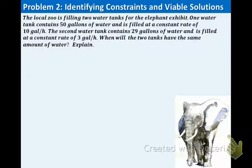Example 2: the local zoo is filling two water tanks for the elephant exhibit. One water tank contains 50 gallons of water and is filled at a constant rate of 10 gallons per hour. The second water tank contains 29 gallons of water and is filled at a constant rate of 3 gallons per hour. When will the two tanks have the same amount of water?